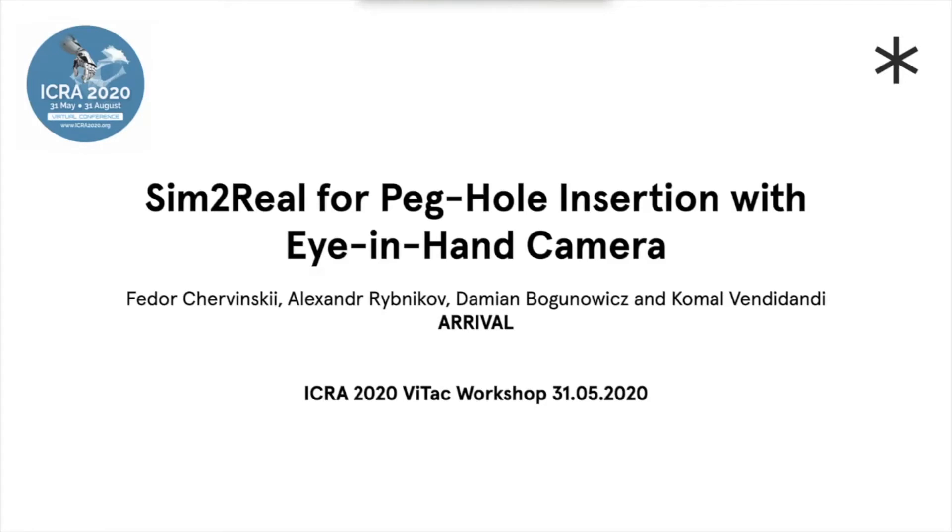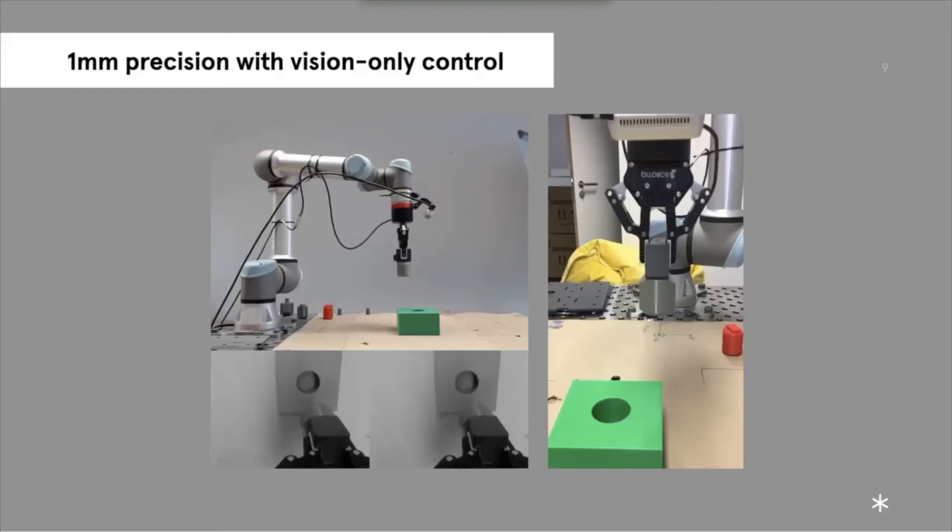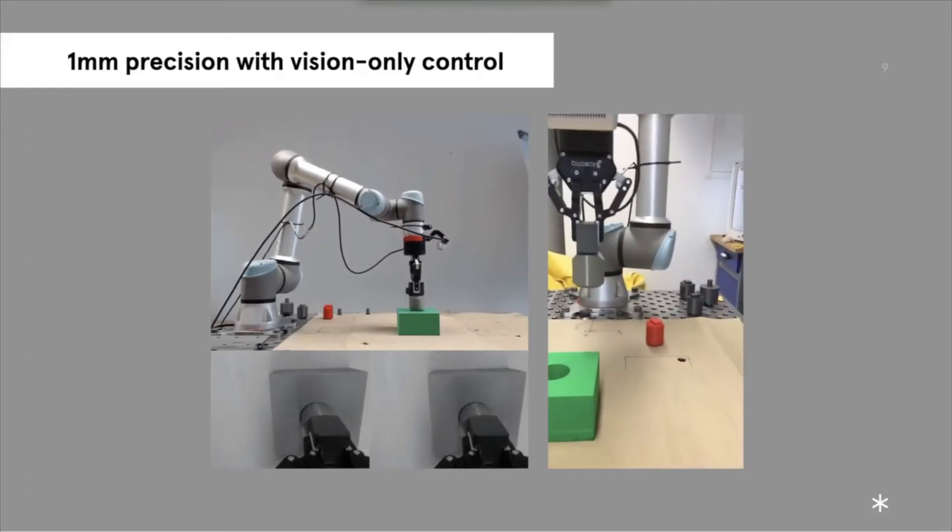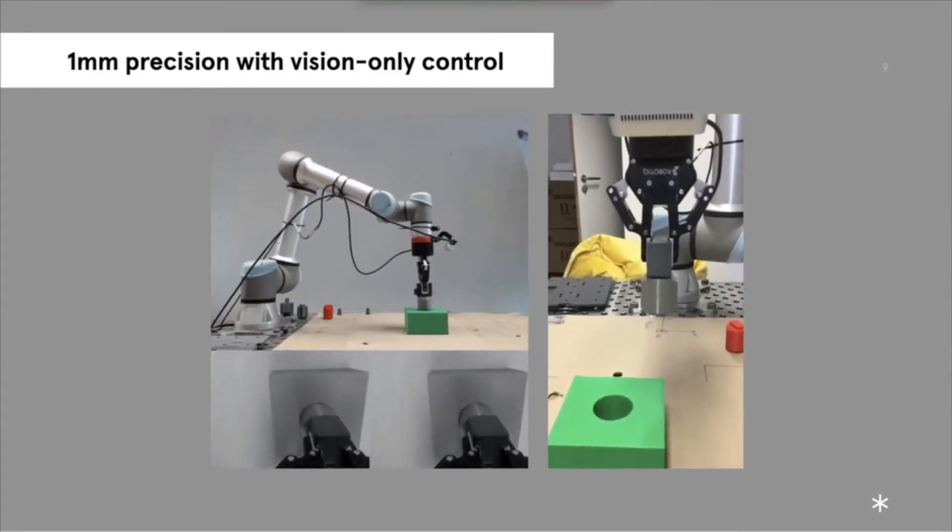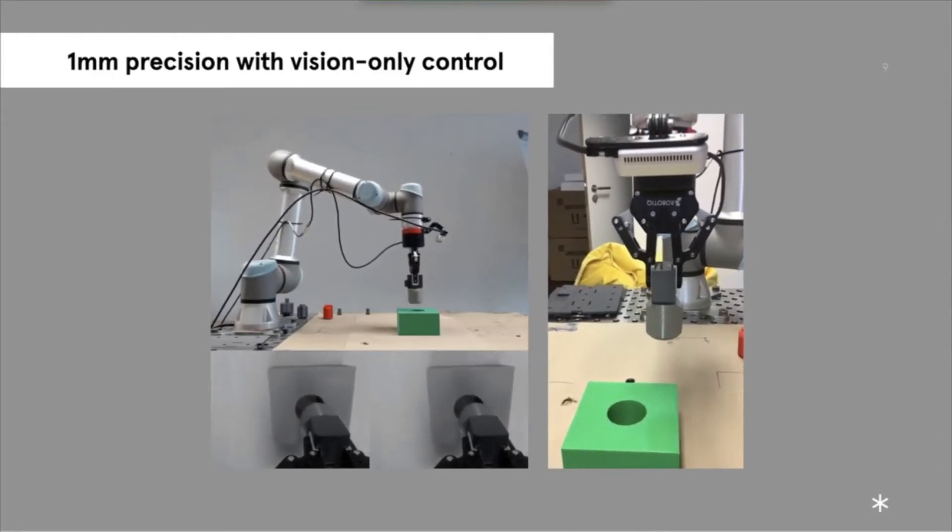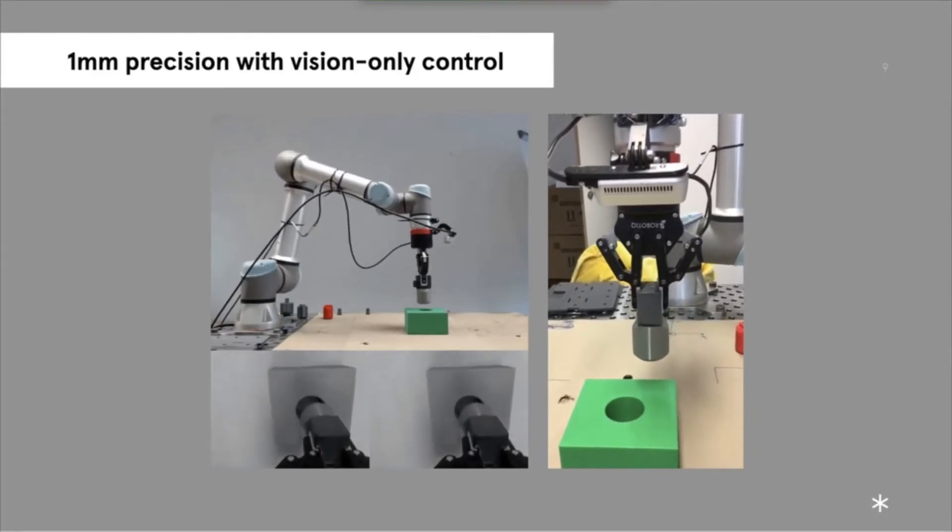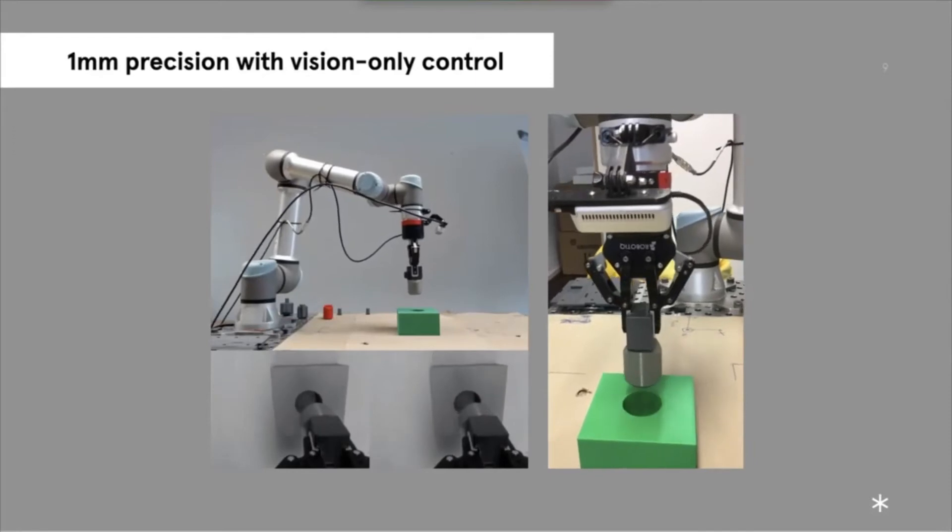And this is how we presented it in ICRA. So the project is called Sim2Real for peg hole insertion with eye and hand cameras. So many specific terms here. For Sim2Real, I guess you already know what it is. Peg hole insertion is classic task for robotics, for robotic assembly when you're trying to insert something into something. And eye and hand camera is when your camera is mounted on the manipulator end effector. This is also the slang name for this kind of scenario. And we start from the results. So here is the working policy deployed on the real robot. So here you can see what is the peg, what is the hole.